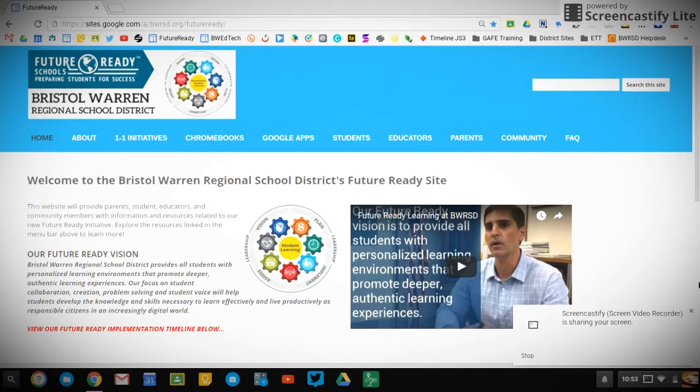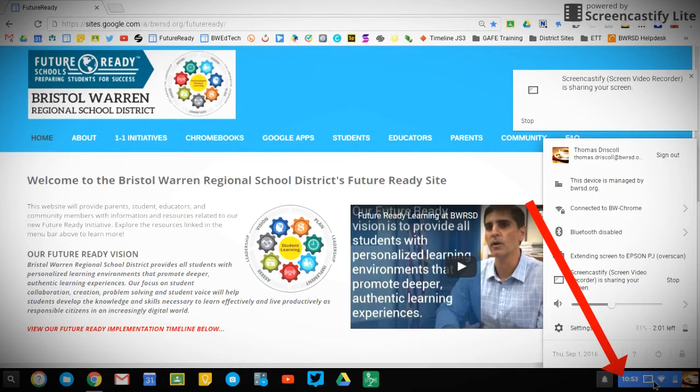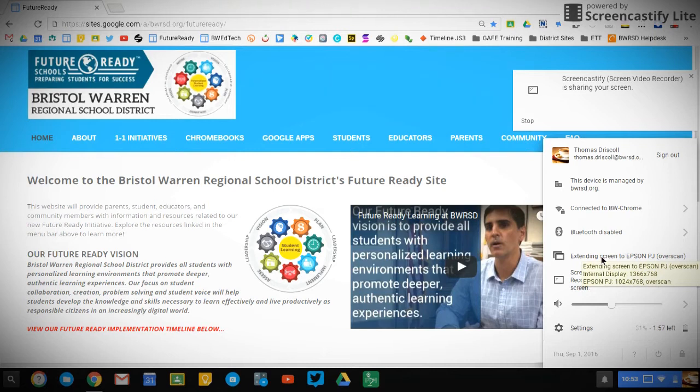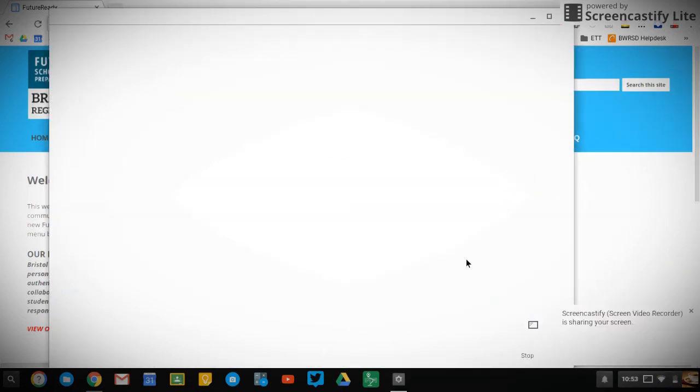you'll have to click on the icons area to the bottom right where it has the time, the Wi-Fi symbol, and the battery. If you click there, a few settings pop up and about halfway down it'll say 'extending screen to' and then have the name of your projector. If you click there, it's going to